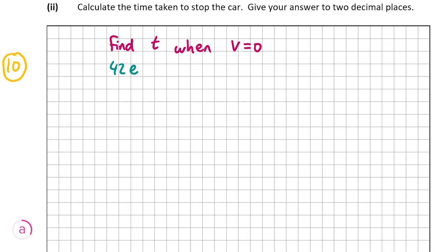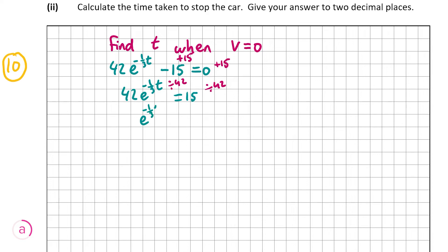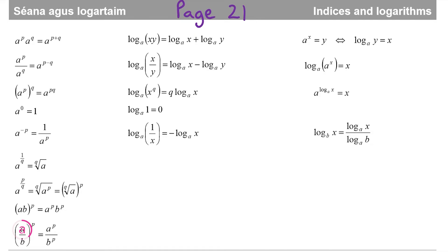We set 42e^(−t/3) − 15 = 0, then add 15 to both sides to get 42e^(−t/3) = 15, and divide by 42 to get e^(−t/3) = 15/42. Because the variable is in the exponent, we use logarithms. Looking at page 21 in the formula and tables book — the third formula in the middle column — log(x^q) = q × log(x).